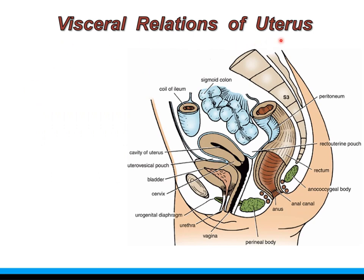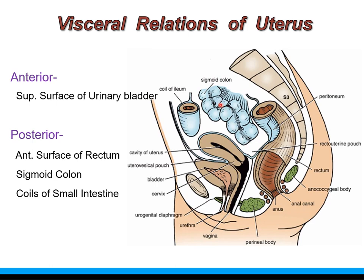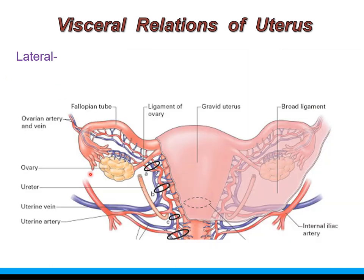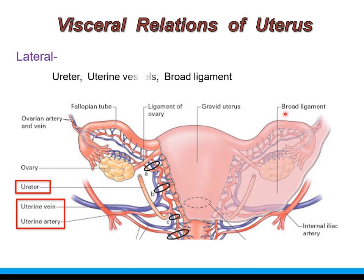The visceral relations of the uterus: anteriorly it is related with the superior surface of the urinary bladder, on which the body of the uterus rests. Posteriorly it is related with the anterior surface of the rectum, sigmoid colon, and a few coils of small intestine. The lateral relations include the ureter, which lies 2 cm away from the cervix. The two non-peritoneal lateral borders are intimately related with the uterine artery and vein, which run between the two layers of the broad ligament. So the lateral relations are the ureter, uterine vessels, and broad ligament.